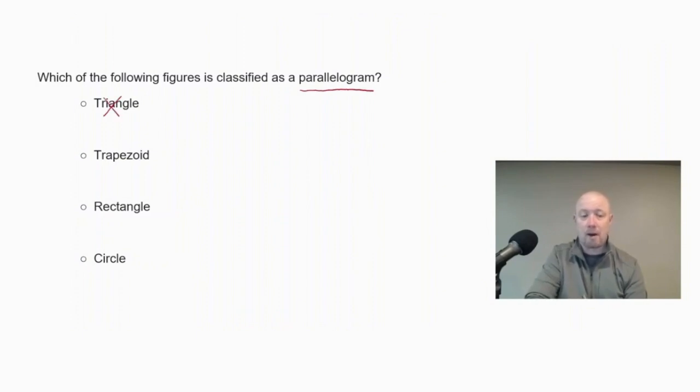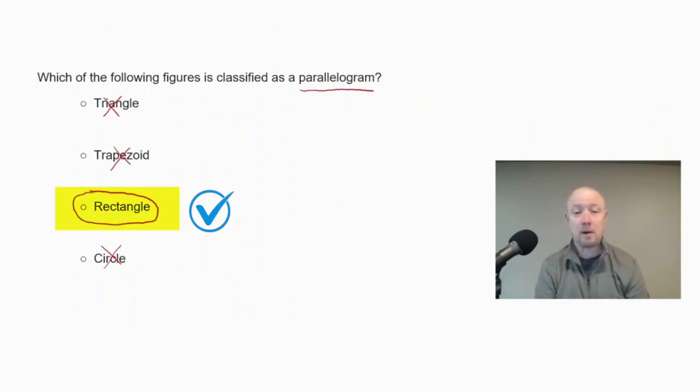So we're looking at a trapezoid and a rectangle. Now a parallelogram is a quadrilateral that has both pairs of opposite sides parallel. In a trapezoid, by definition, a trapezoid has exactly one pair of opposite sides parallel, and the other pair of opposite sides are not parallel. So we're going to eliminate trapezoid. So the correct answer is rectangle. A rectangle is a type of parallelogram with both pairs of opposite sides parallel and congruent, and it has four right angles.